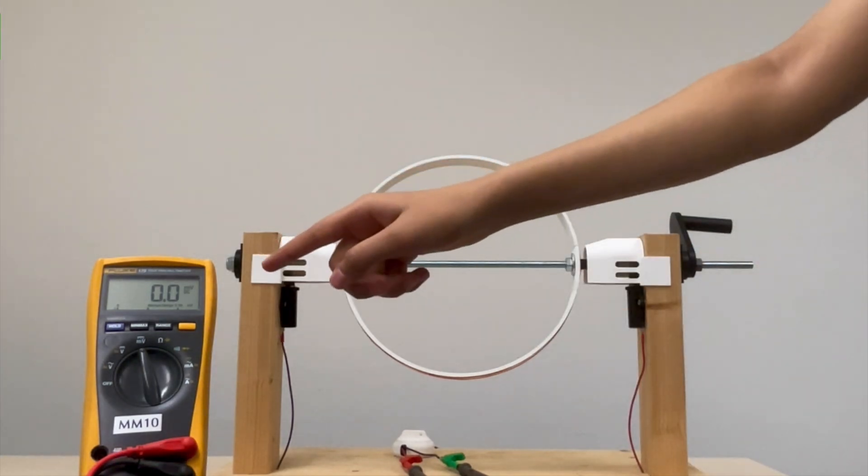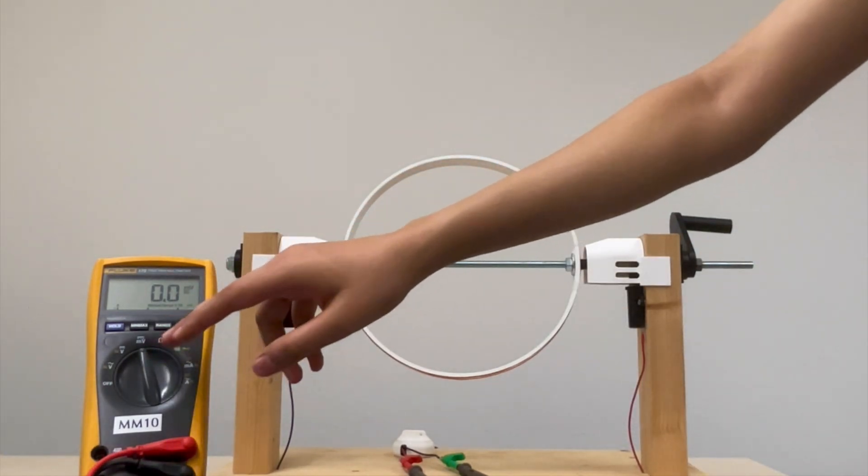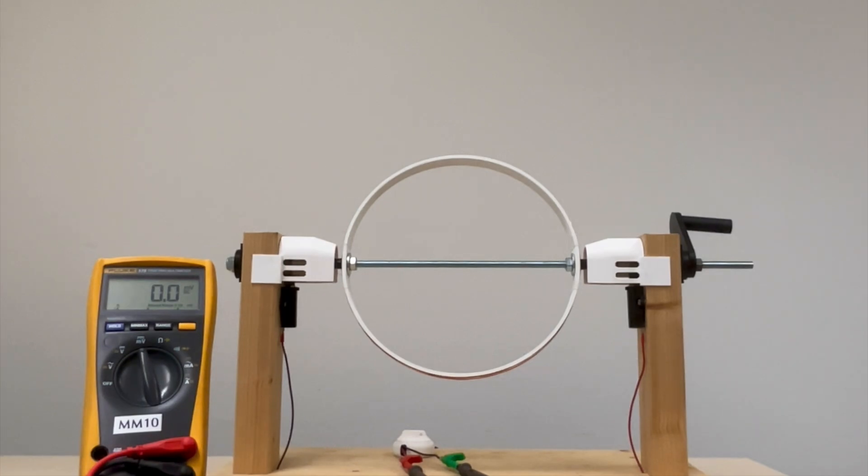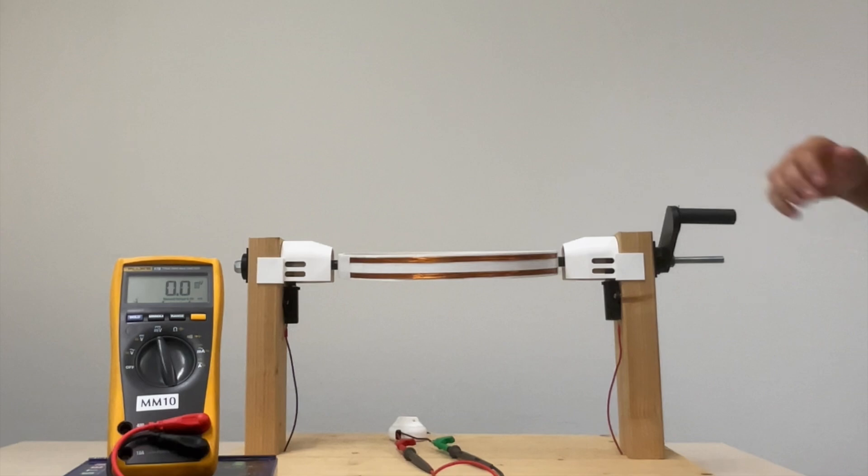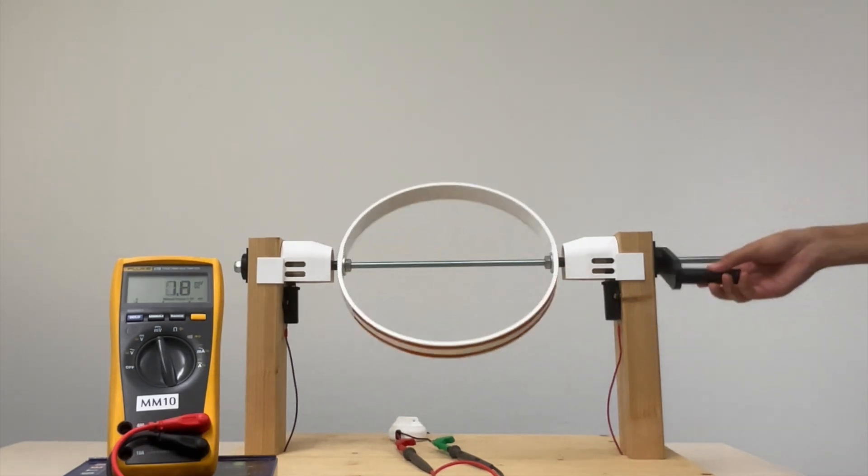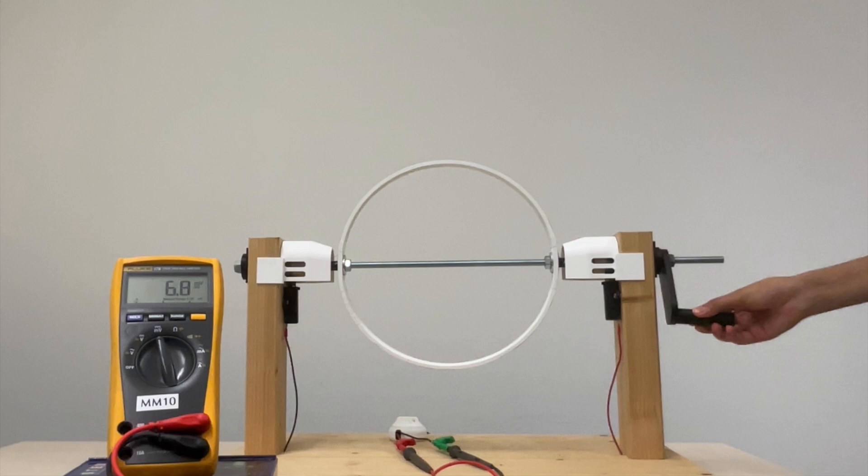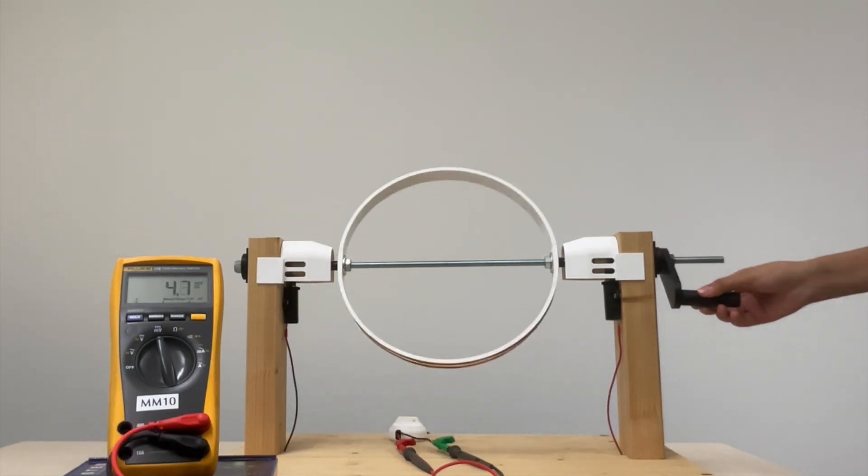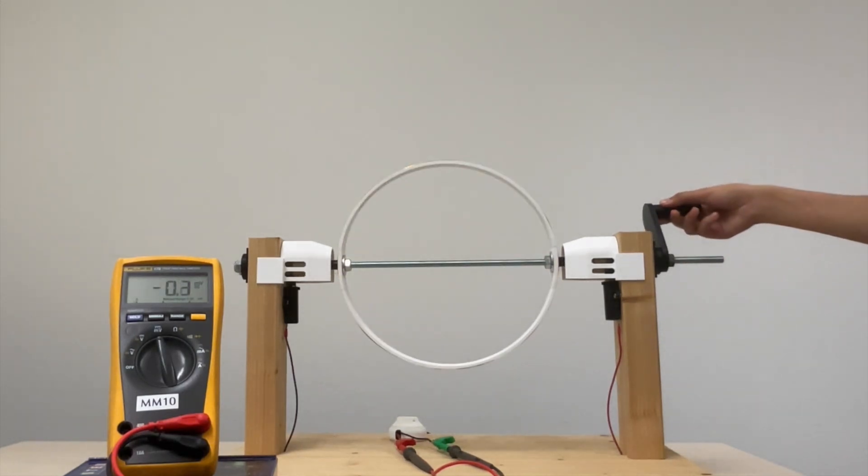The multimeter we will be using is set to measure in millivolts, which is ideal for detecting the small voltages that are generated. So when the loop is aligned parallel to the magnetic field, there is zero flux passing through it. But when the loop is perpendicular to the field, the flux is at its maximum. This change in magnetic flux as the loop rotates is what generates electricity.